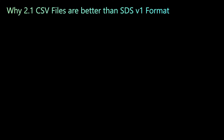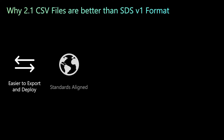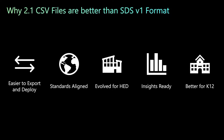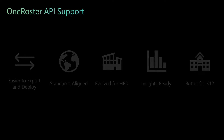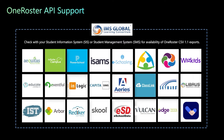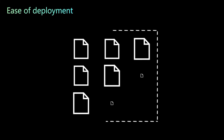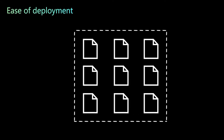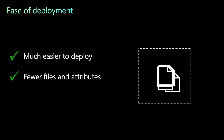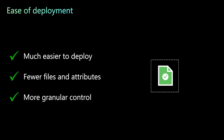With version 2.1 CSV files, you enjoy additional capabilities. We have an expanded data set that now empowers higher education institutions, which is a key improvement over all previous SDS CSV formats. One Roster version 1.1 was created for K-12 and higher ed customers by the IMS Global Learning Consortium, and we developed version 2.1 to take advantage of the data that format can provide. With more optional fields than previous versions, School Data Sync is now much easier to deploy, requiring fewer files and attributes to get started.